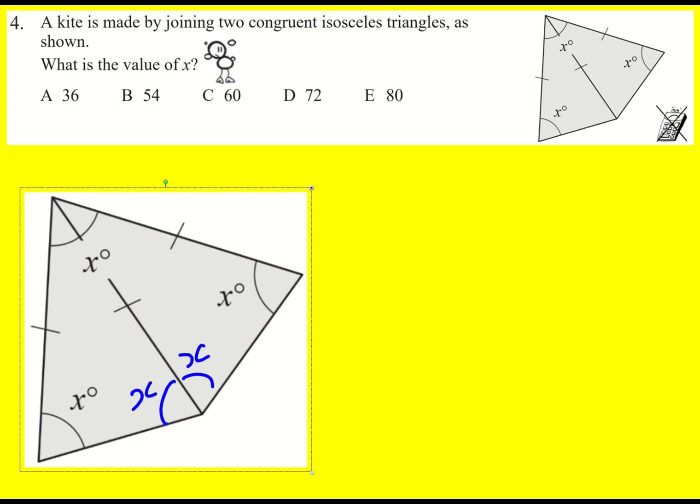If we add them up I'm going to get 5x. So it must be that 5x is equal to 360 and therefore x is going to be 360 divided by 5.